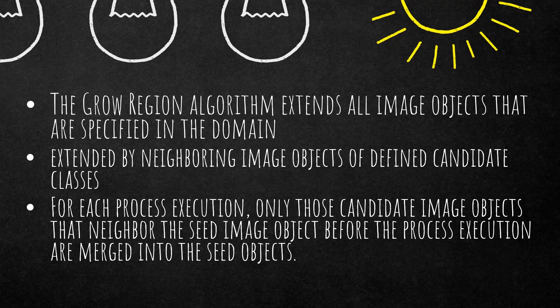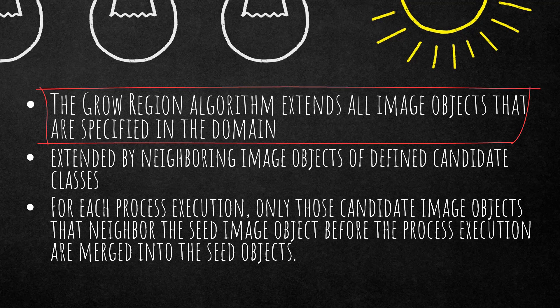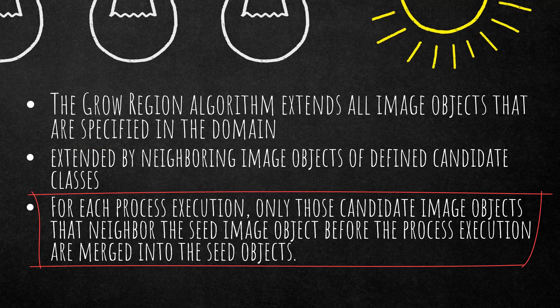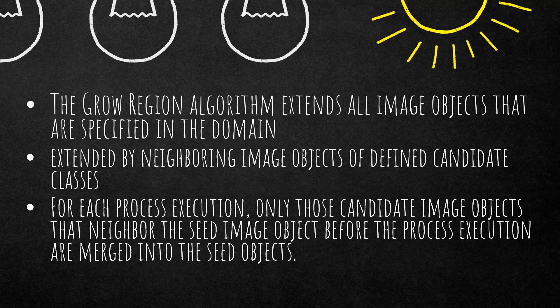What is grow region doing? This algorithm extends all image objects that are specified in the domain. In the domain you define the seed image objects that then are growing, and they are growing by neighboring image objects of defined candidate classes. So you can also define the candidates that the image objects — the seeds — are growing into. For each process execution, the candidate image objects that neighbor the seed image objects are merged into the seed objects.